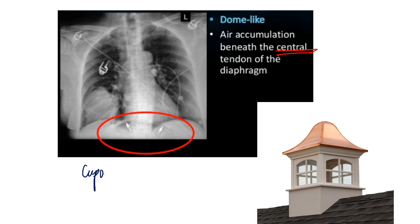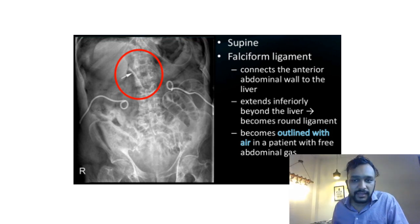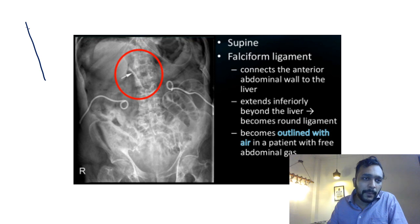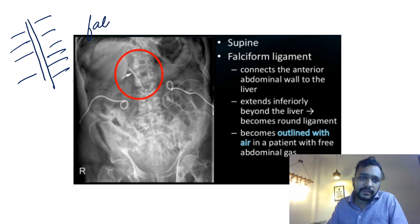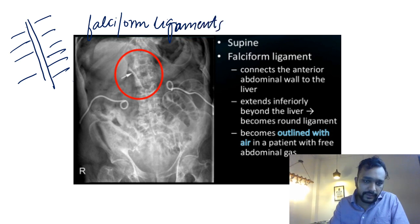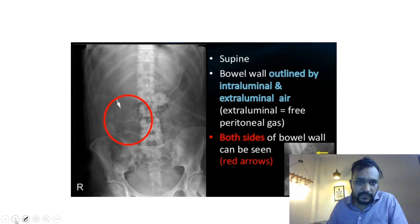A few other important signs: if there is air accumulation beneath the central tendon of the diaphragm, this is known as the cupola sign. If there is radiolucency along the falciform ligament — normally the falciform ligament is never visualized — because air is collected around both the right and left parts of the falciform ligament, it gets outlined and can be seen separately. This is known as the falciform ligament sign.